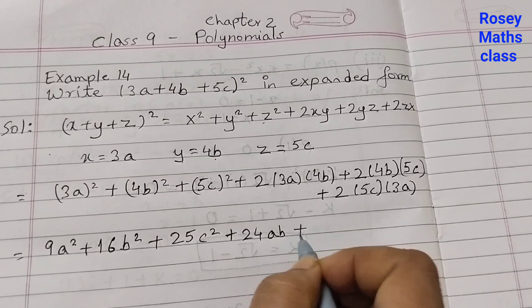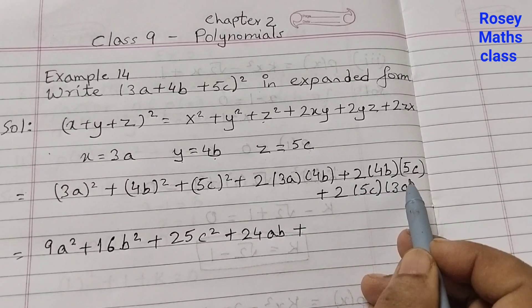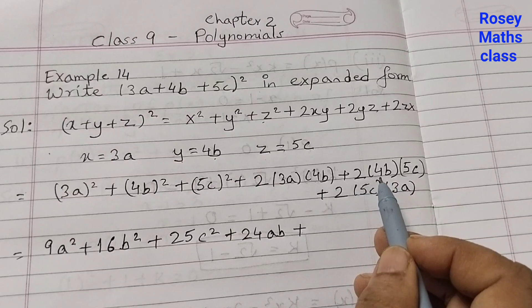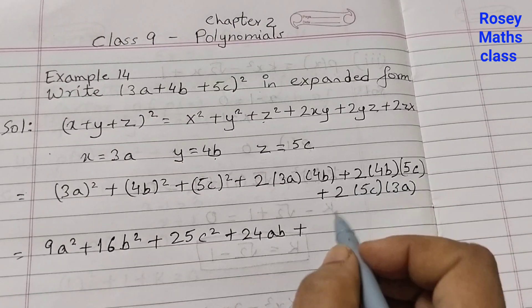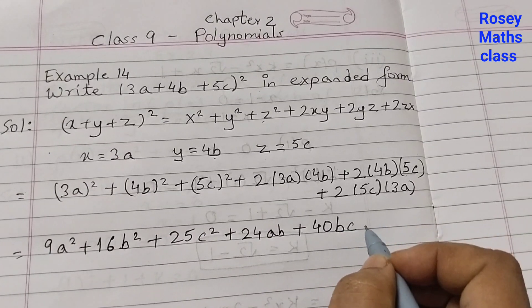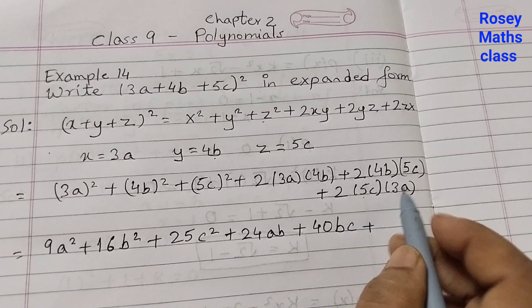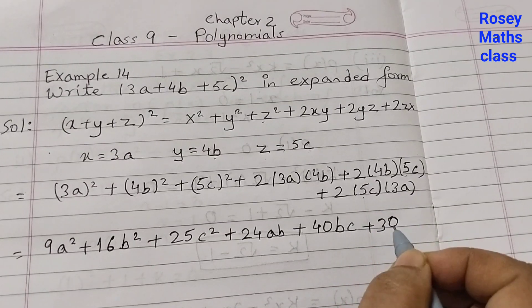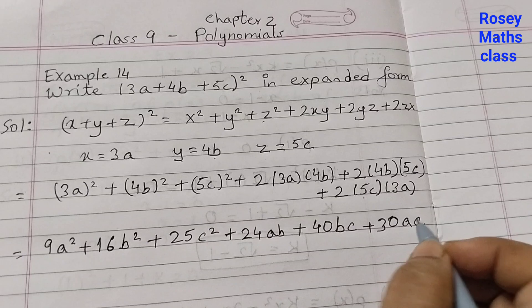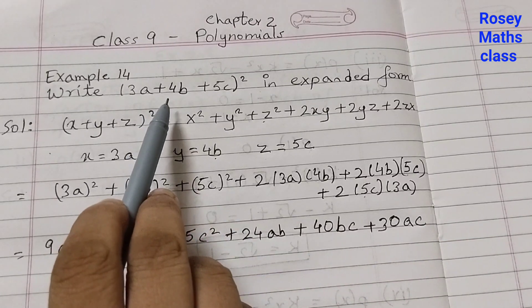Plus 2 into 4 into 5: 2 times 4 is 8, 8 times 5 is 40, so 40bc. Plus 2 into 5 into 3: that's 10 times 3, which is 30, so 30ac. This is the expanded form of the given expression.